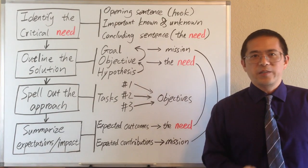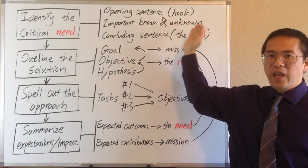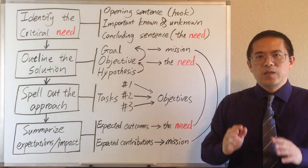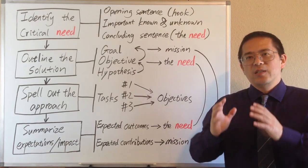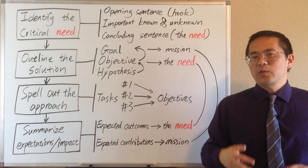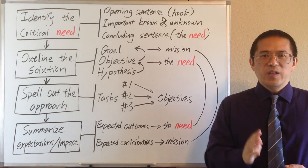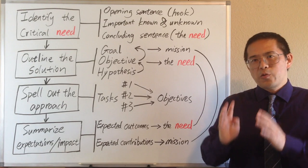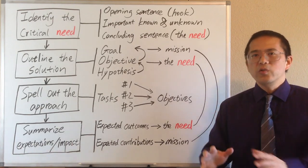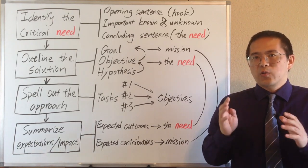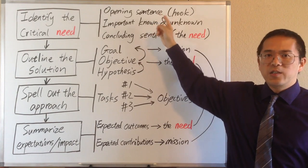Following the first sentence, we should try to use three to four sentences to summarize important known and unknown related to the problem, to inform our readers everything they need to know to understand the critical need. We'd better demonstrate that we are knowledgeable on the topic using only three to four sentences. But the most important thing is, these three to four sentences should provide a logical point of view on the topic. They must lead to a conclusion that there is a critical need we need to address in order to solve the problem presented in the first sentence.